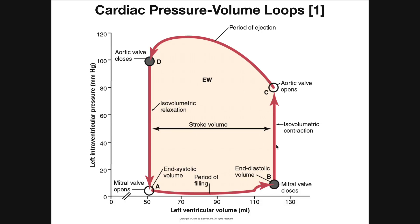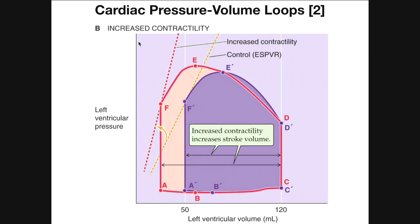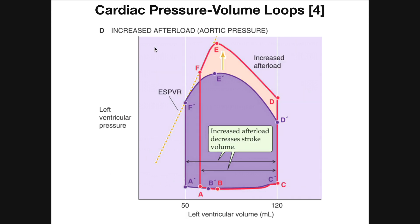Welcome back to Anatomy and Physiology on Catalyst University. My name is Kevin Tokoff. Please make sure to like this video and subscribe to my channel for future videos and notifications. In this video and the next video, we're going to be looking at cardiac pressure volume loops. We're going to be using the left ventricle as an example, and in the following video we'll see how changes in contractility, preload, and afterload affect the shape of the cardiac pressure volume loop.